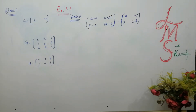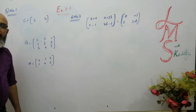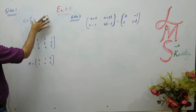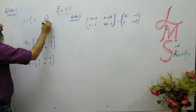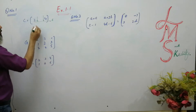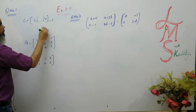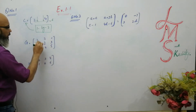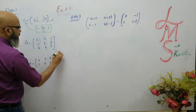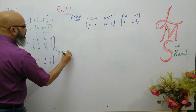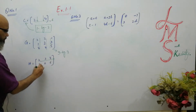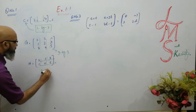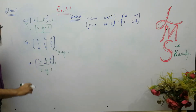Now come to exercise 1.1. We will solve questions on finding the order of a matrix — simply number of rows by number of columns. This matrix has one row and two columns, so its order is 1×2. The order of matrix K is 3×3. Matrix H has two rows and three columns, so its order is 2×3. It's very easy to find the order of a matrix.